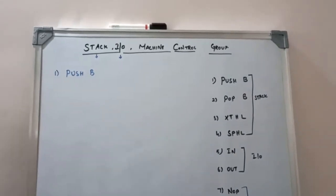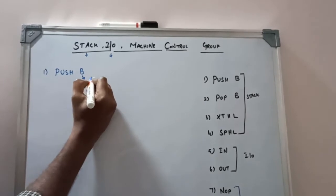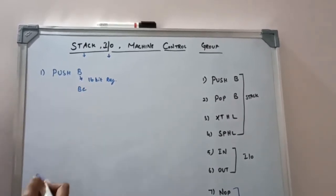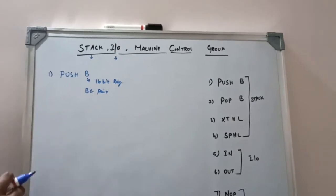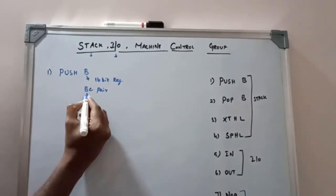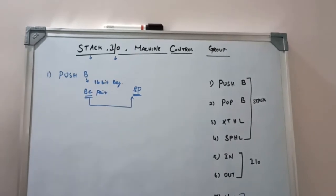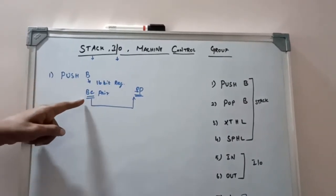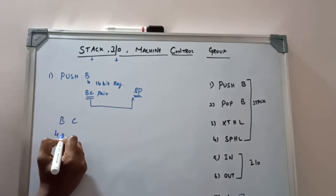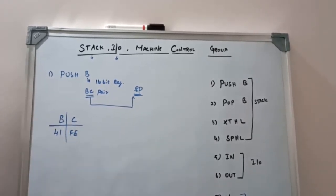The first instruction is PUSH B. PUSH means insert the content to the stack pointer. Here the B register is considered as a 16-bit register, so we take it as the BC pair. Whatever content is present in the BC pair, that content is transferred to the stack pointer. For example, the C register holds FE and B register holds 40, making a 16-bit value.